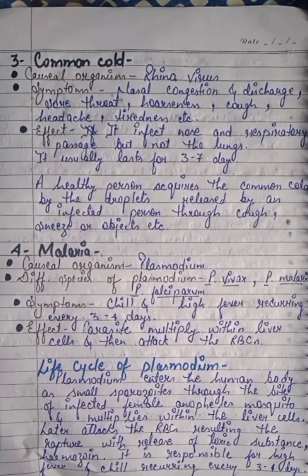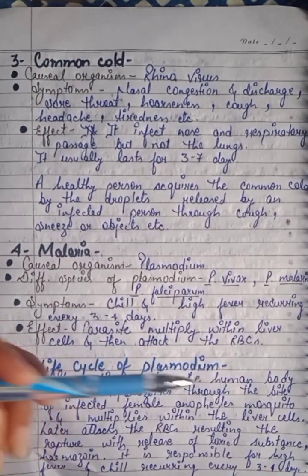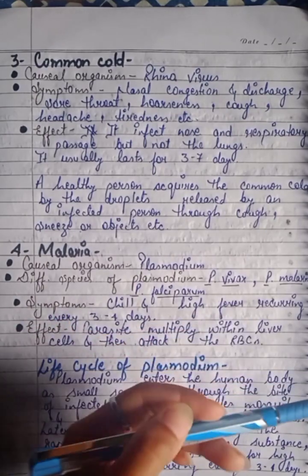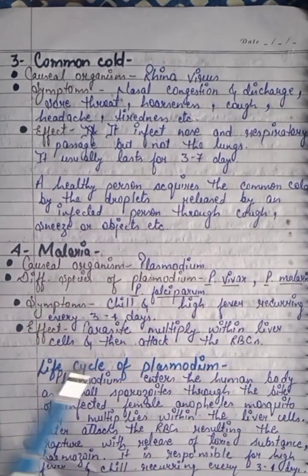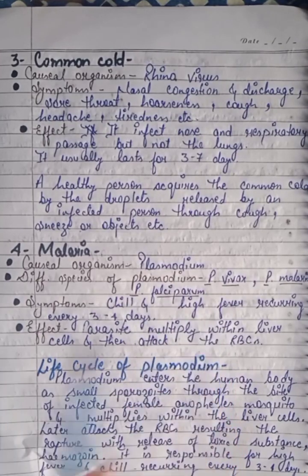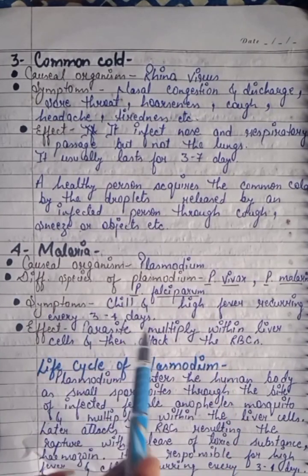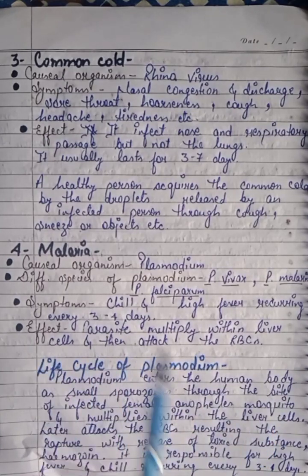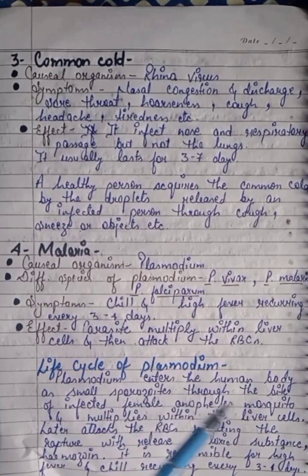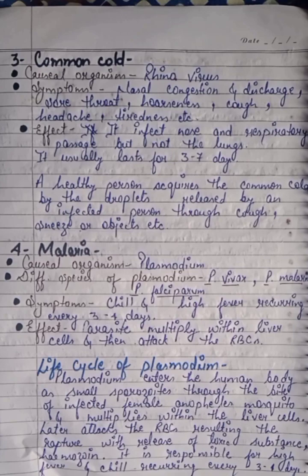Fourth is Malaria, which is very commonly seen, mostly in summer. The causal organism is Plasmodium. Different species include Plasmodium vivax, Plasmodium malariae, and Plasmodium falciparum — of these, Plasmodium falciparum is the most harmful. Symptoms are chills and high fever recurring every 3 to 4 days. The parasite multiplies within liver cells and then attacks the RBCs.